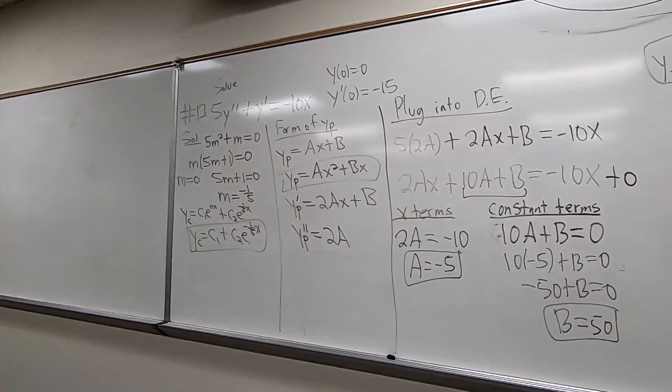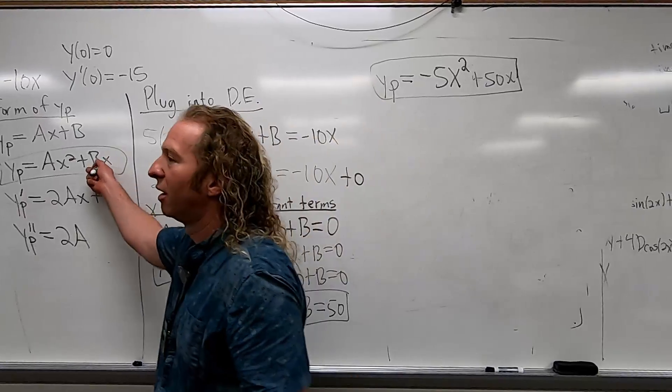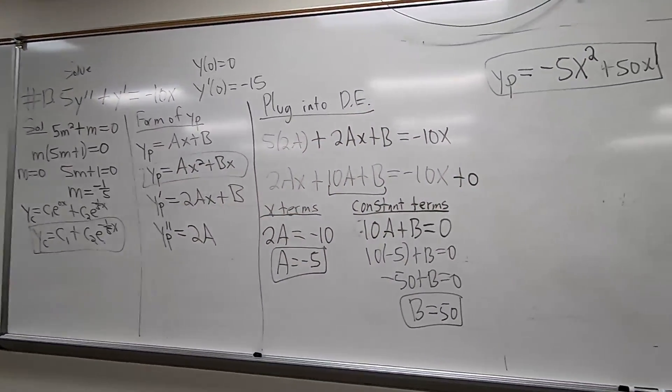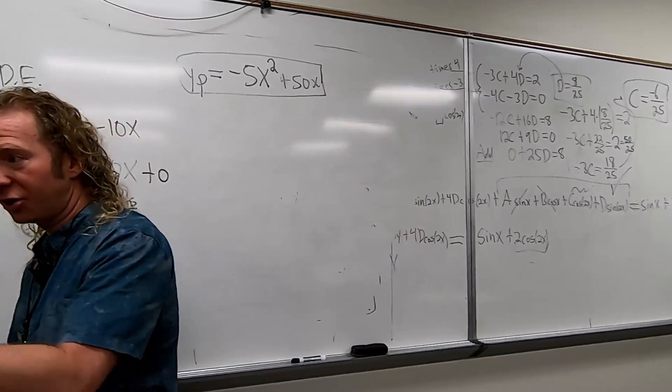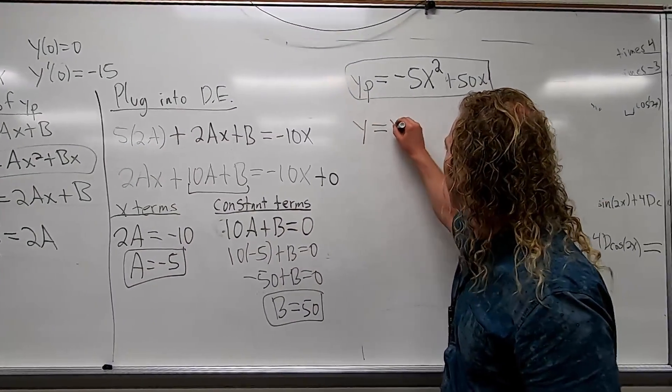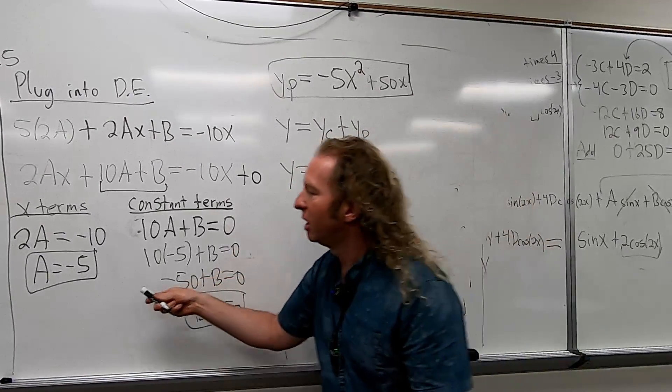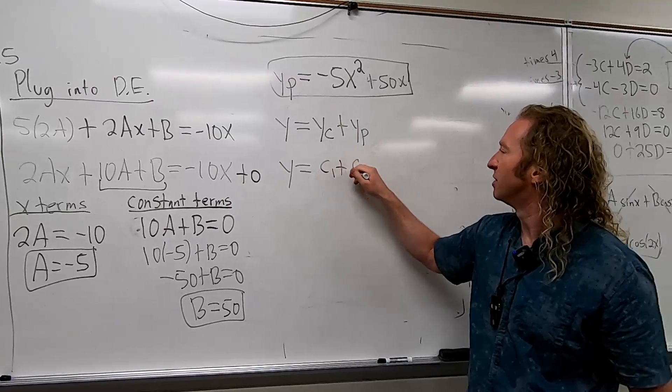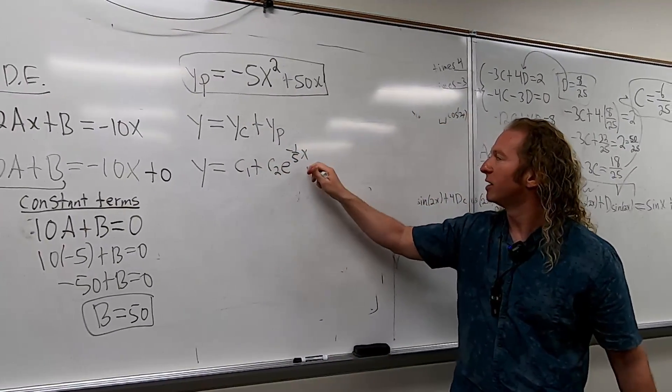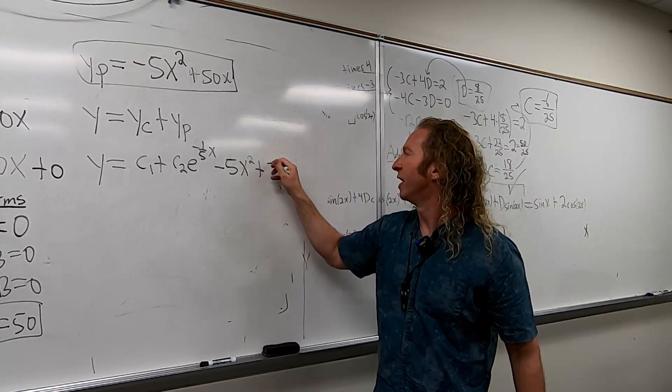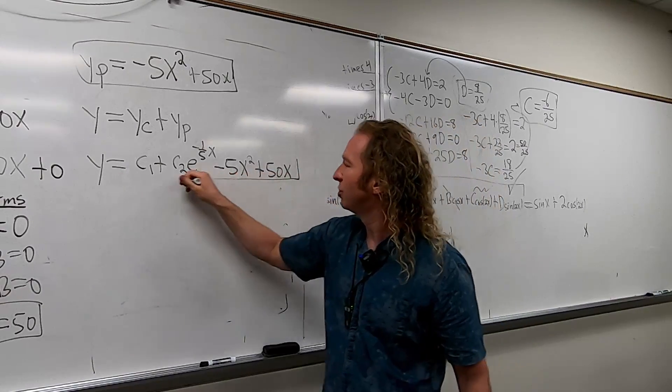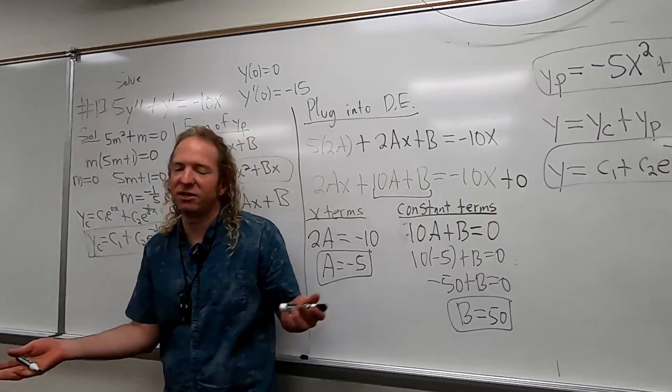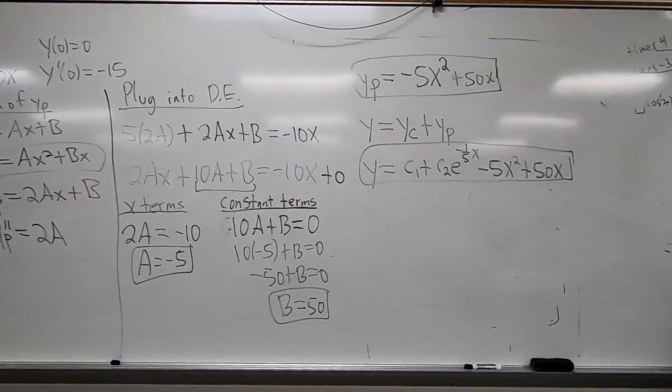What would be the next step? It goes in the modified one. What's the next step? What do we do? The general equation? Yeah, the general solution. YC plus YP. So Y equals YC plus YP. I'll show the steps. YC plus YP. So Y equals. So Y sub C is this one. C1 plus C2 e to the negative 1 fifth X. So C1 plus C2 e to the negative 1 fifth X plus YP. So minus 5X squared plus 50X. So that's the general solution to the DE. But we're not done. It doesn't matter if you do YC or YP. It doesn't matter. It's just customary to put YC first, but it doesn't matter.